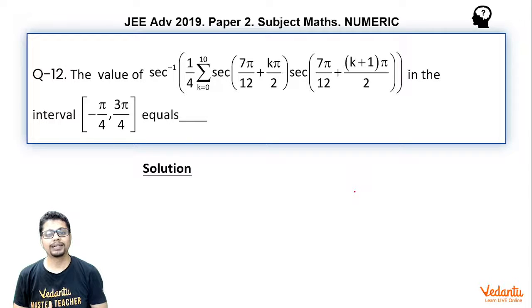The value of sec inverse 1 by 4 sigma k equal to 0 to 10 sec 7 pi by 12 plus k pi by 2 sec 7 pi by 12 plus k plus 1 whole times pi by 2 in the interval minus pi by 4 closed to 3 pi by 4 closed equals.